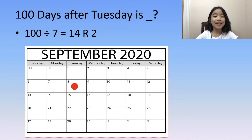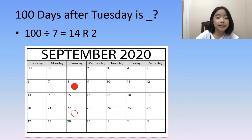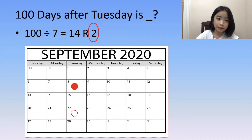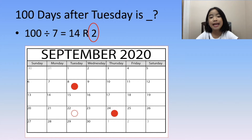To make it easier to show the problem, I put the Tuesday here. There is a remainder of two. So two days after Tuesday is Thursday. So we have our answer: 100 days after Tuesday is Thursday.